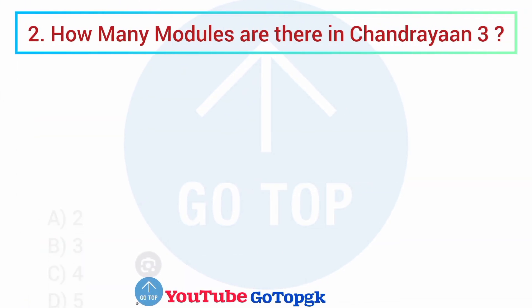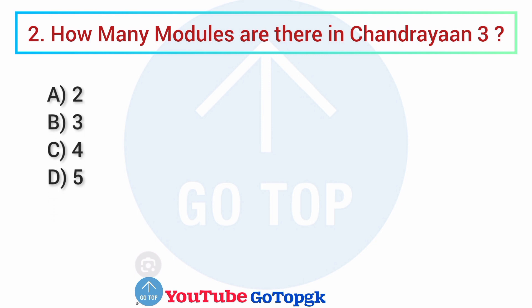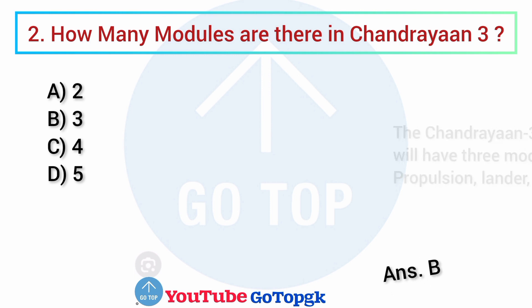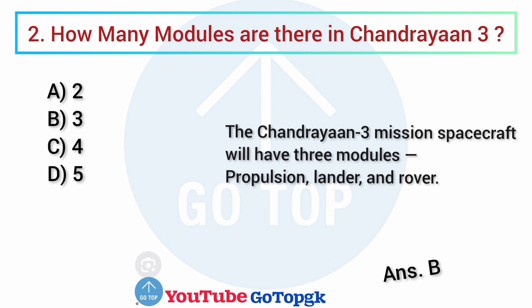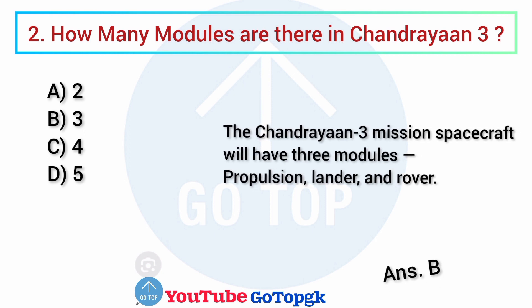Question No. 2. How many modules are there in Chandrayaan-3? Options: A. 2, B. 3, C. 4, D. 5. Your correct answer is option B. There are 3 modules in Chandrayaan-3: Propulsion, Lander, and Rover.